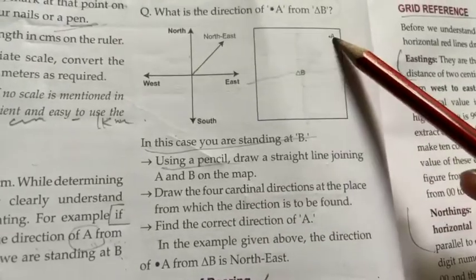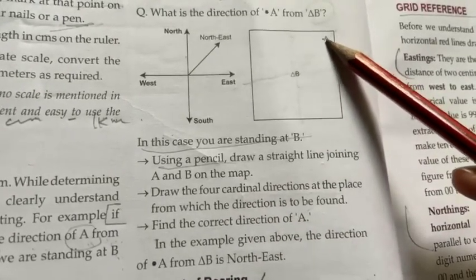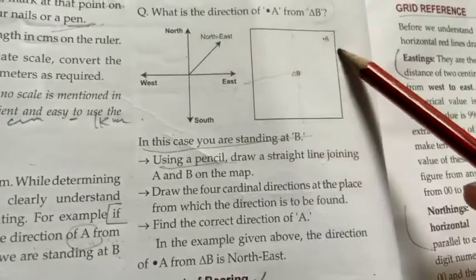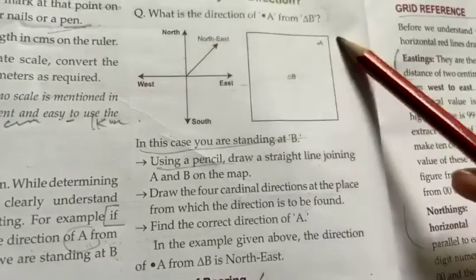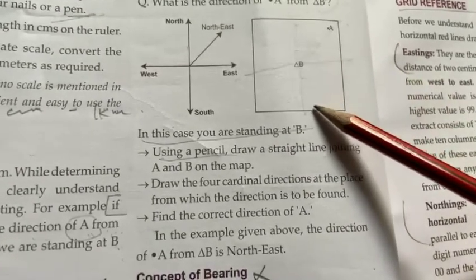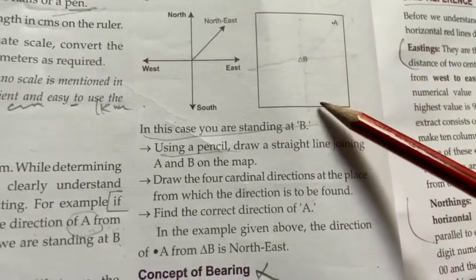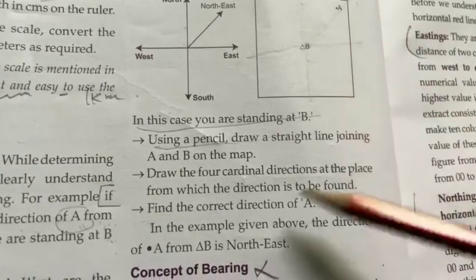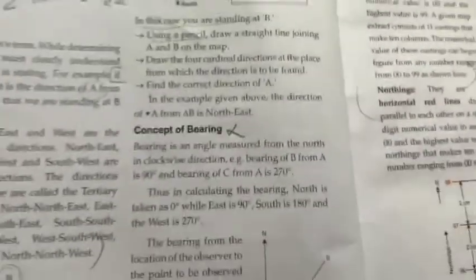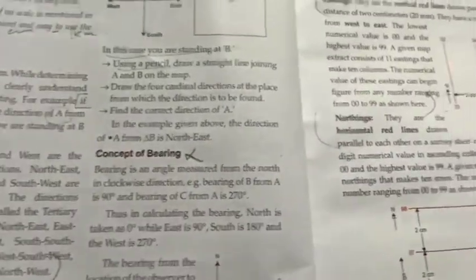उसके बाद आप find कर सकते हैं correct direction of A. अब आपको पता चलेगा कि आप B पर खड़े हुए हैं, तो आप देख सकते हैं कि A North-East में है। इस तरह से आप direction find out करते हैं। Concept of bearing हमें नहीं पढ़ना है, because this is not in your syllabus.